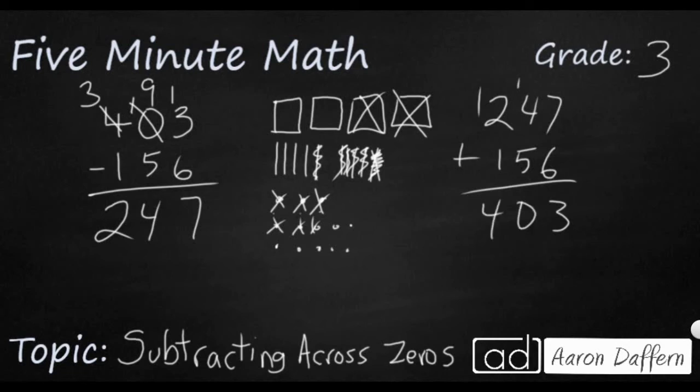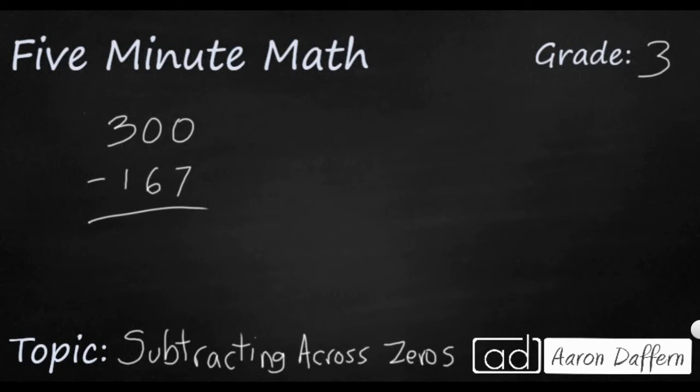Let's look at a different example. Another problem might be 300 minus 167. So I'm going to draw my hundreds flats again. First I need to take away seven ones, but I can't take seven ones away because I don't have any ones.